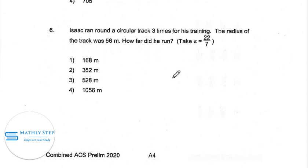He runs the perimeter of the circular track. So for each run, the perimeter will be 2πr equals 2π times 56.